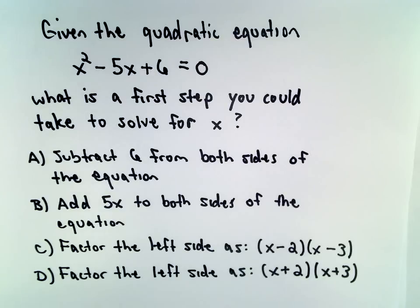Here we have the quadratic equation x squared minus 5x plus 6 equals 0. And the question is, what is a good first step you could take to help solve for x?